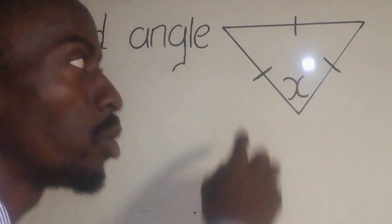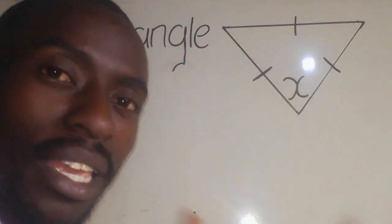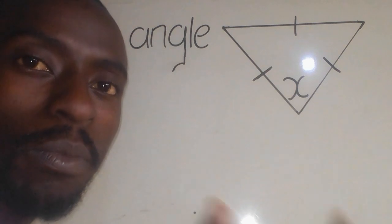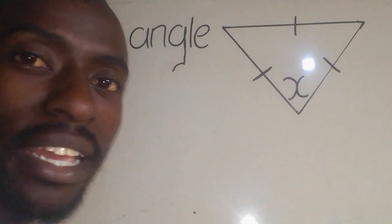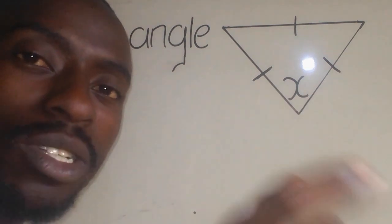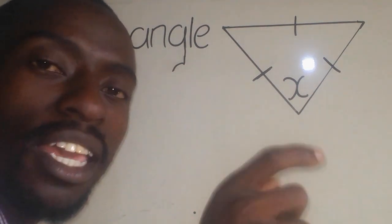A triangle is a polygon with these three sides. We have different types of triangles. This type of triangle is known as an equilateral triangle. The word equilateral - the prefix equi simply means equal.